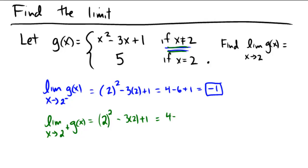Oh, so it's the same problem, 4 minus 6 plus 1, and that's negative 1. So now we can say overall the limit is equal to negative 1 because it approaches the same number from the left and from the right.